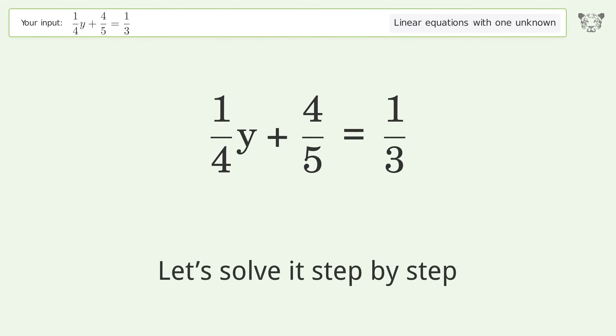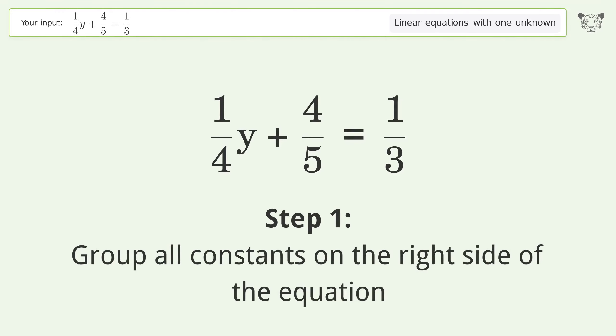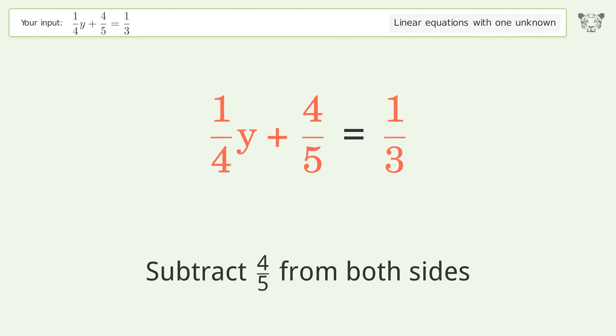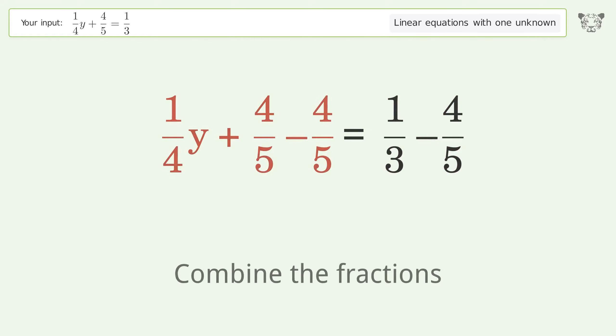Let's solve it step by step. Group all constants on the right side of the equation. Subtract 4 over 5 from both sides. Combine the fractions.